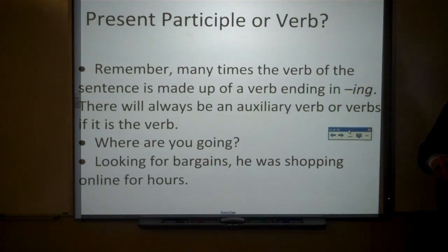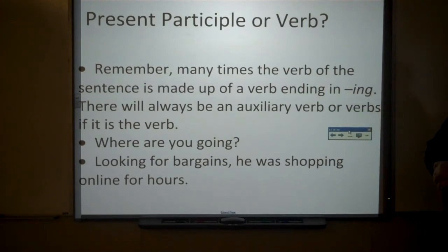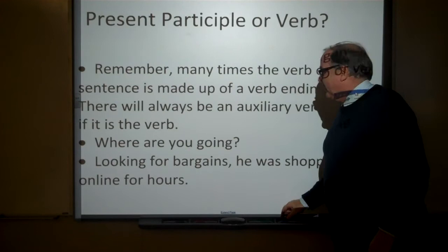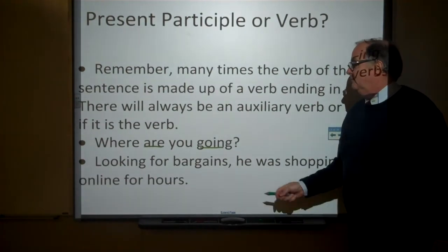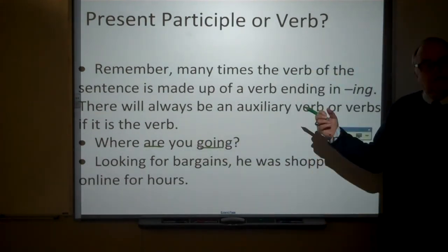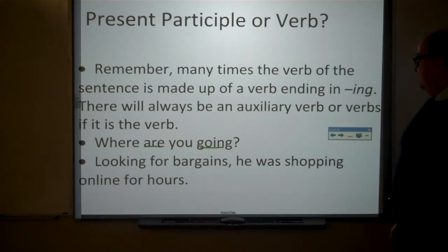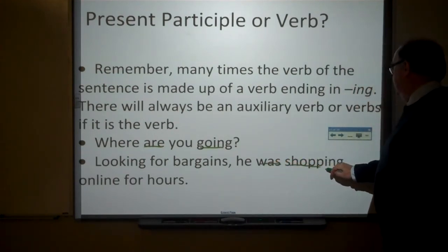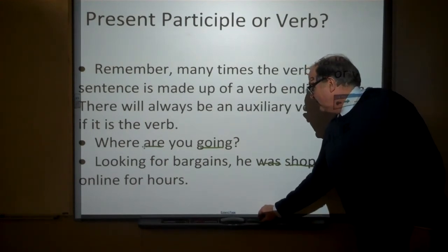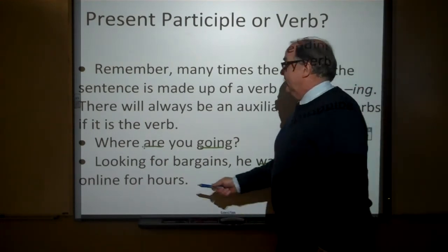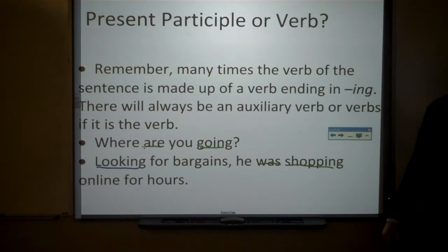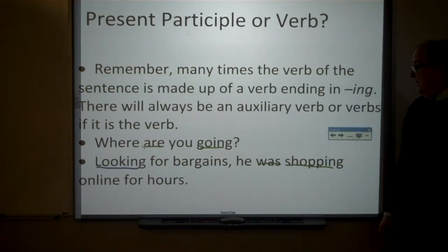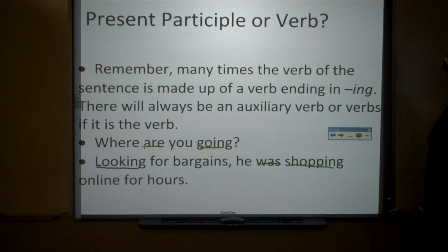Remember, many times the verb of a sentence is made up of a verb ending in ING, but if that's the case there will always be an auxiliary verb. For example, 'Where are you going?' — are going is the verb phrase. 'Looking for bargains, he was shopping online for hours' — was shopping is the main verb, while looking is a present participle describing he.